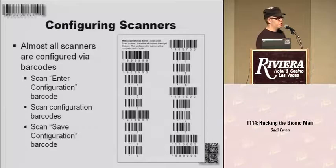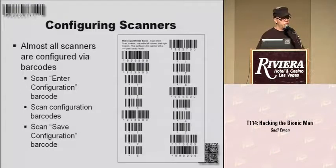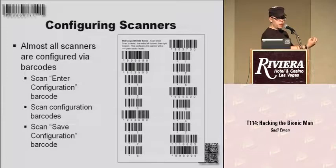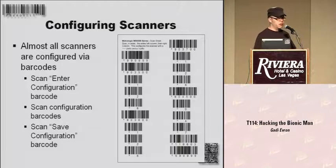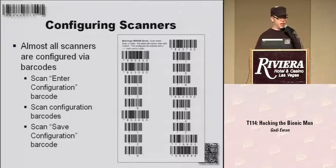Now we're coming to the first interesting thing about barcodes: the scanners. Scanners that face outside to a potentially hostile barcode are actually configured by barcodes. You have a scanner — one side faces an attacker, the other is connected to a computer — and you actually configure it from the attacker side. What happens is there's a special 'enter configuration mode' barcode that ships with every scanner. You scan it, it goes into config mode, you scan other barcodes to change the configuration, scan an 'end of configuration' barcode, and it gets saved to the scanner. I've actually seen a scanner that offered software updates over barcode, which was scary.